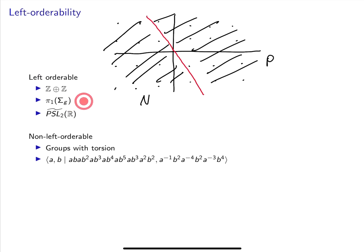More generally, π₁ of an oriented surface of genus G is left orderable. Here's another example that's useful in practice. The universal cover of PSL₂(ℝ) is left orderable. Why is that? Well, PSL₂(ℝ) acts on ℍ², and it also acts on the boundary of ℍ² at infinity. The universal cover of PSL₂(ℝ) acts on the universal cover of S¹, so it acts on ℝ and is left orderable.